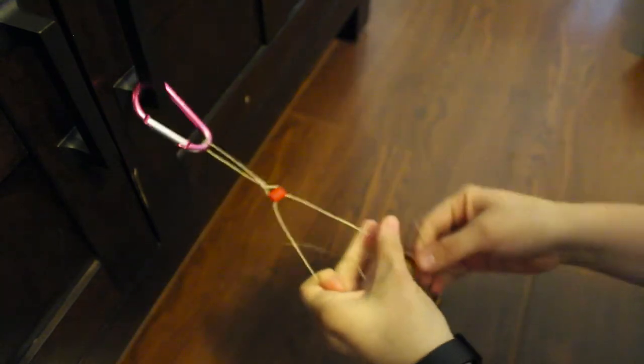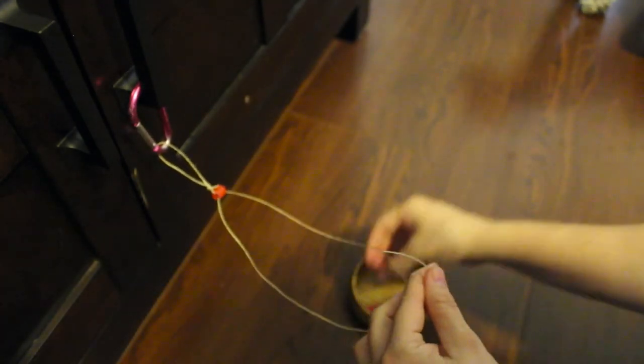Start with one segment of straw. Put one of your strings through the straw and then put the other string through in the opposite direction. Move the segment up to the knot in the string and center the knot in the straw segment. Do the same with your next straw segment. Put one string through, then put the other string through in the opposite direction. Move the segment up so that it touches the first segment. Continue doing this with more straw segments. You can use one color or multiple colors. If you need to straighten or adjust the straw segments, you can do that throughout.